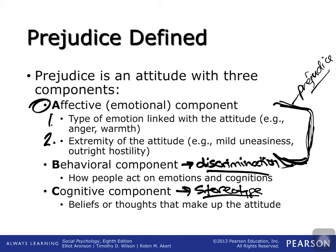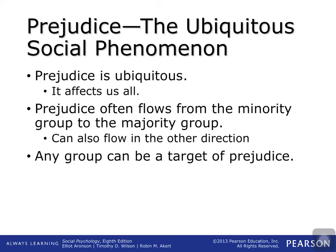Prejudice is built on the emotional component of the attitude, but all components are important for attitudes towards people. One thing important to consider about prejudice is that it's ubiquitous — it doesn't seem to have any safety net with any particular person. It affects every person. Prejudice often flows from the minority group to the majority group and also in the other direction.